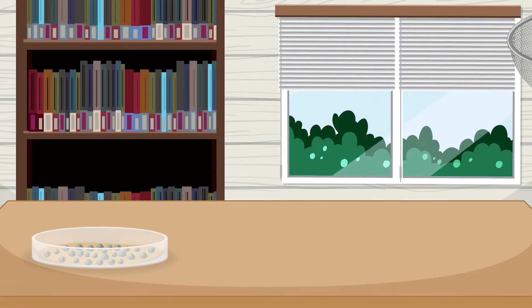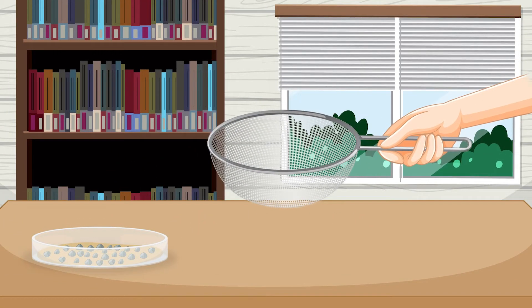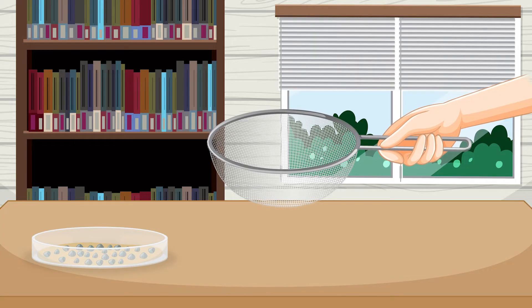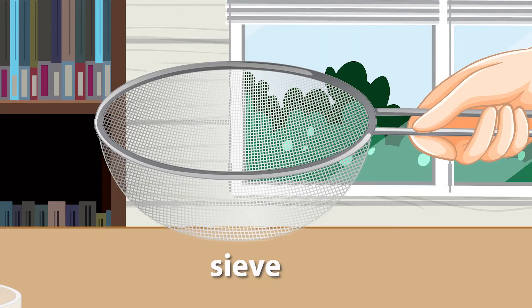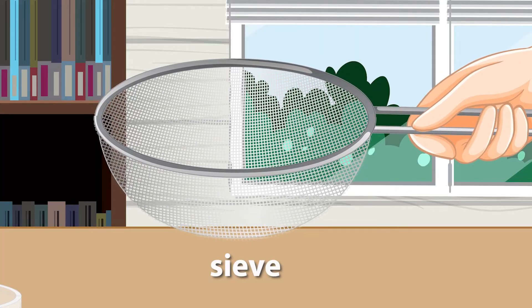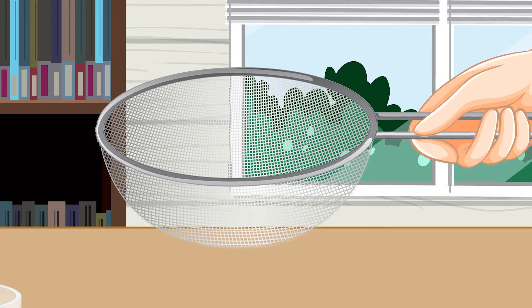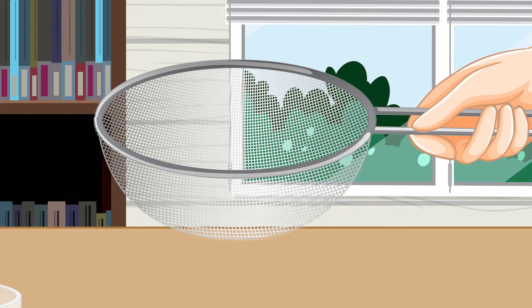Fortunately, we can use a tool called a sieve to make this task much easier. A sieve is a tool made of a fine wire mesh or perforated metal sheet with evenly sized holes. The holes are big enough to let the sand pass through, but small enough to stop the gravel.